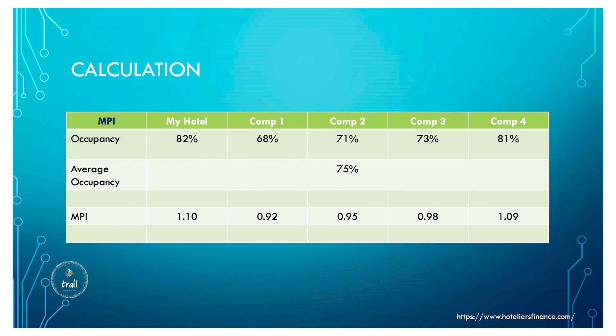Competition one's MPI is 0.92 — they're losing market share. Competition two is 0.95, again losing occupancy. Competition three is 0.98, almost in line but still losing. Competition four is 1.09, also gaining. So MPI shows how much we are penetrating the market — whether we are taking our fair share or eating somebody else's. My hotel and competition four are the most aggressive, while competitions one, two, and three are slightly losing market.